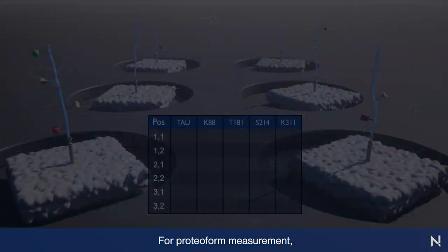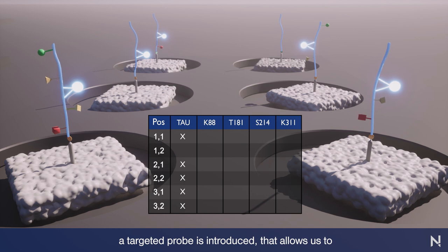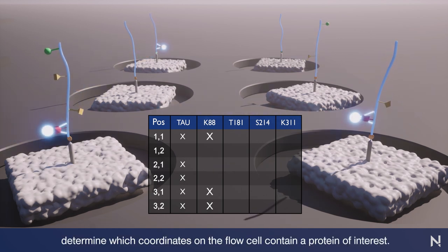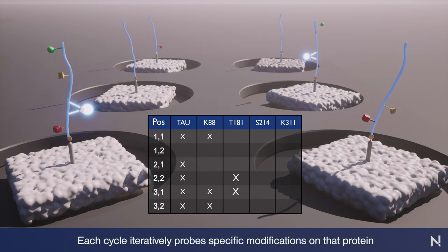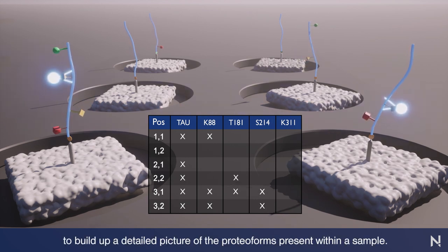For proteoform measurement, a targeted probe is introduced that allows us to determine which coordinates on the flow cell contain a protein of interest. Each cycle iteratively probes specific modifications on that protein to build up a detailed picture of the proteoforms present within a sample.